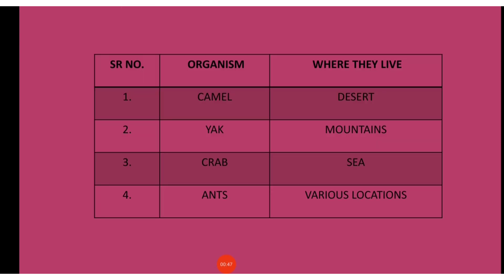See this table. This table shows some common organisms and their places to live. For example, camels live in the desert, yak in mountains, crabs in the sea and ants in various locations.